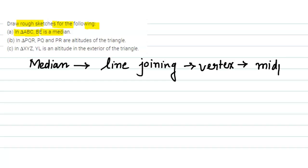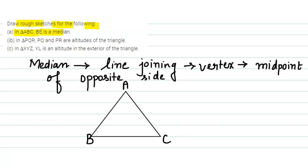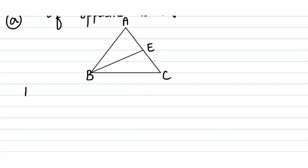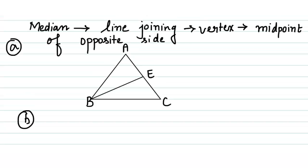So let us draw the triangle ABC first. This is our triangle A, B, and C. From the vertex B we have to draw a median BE. So this is the median. That completes part A of the question.